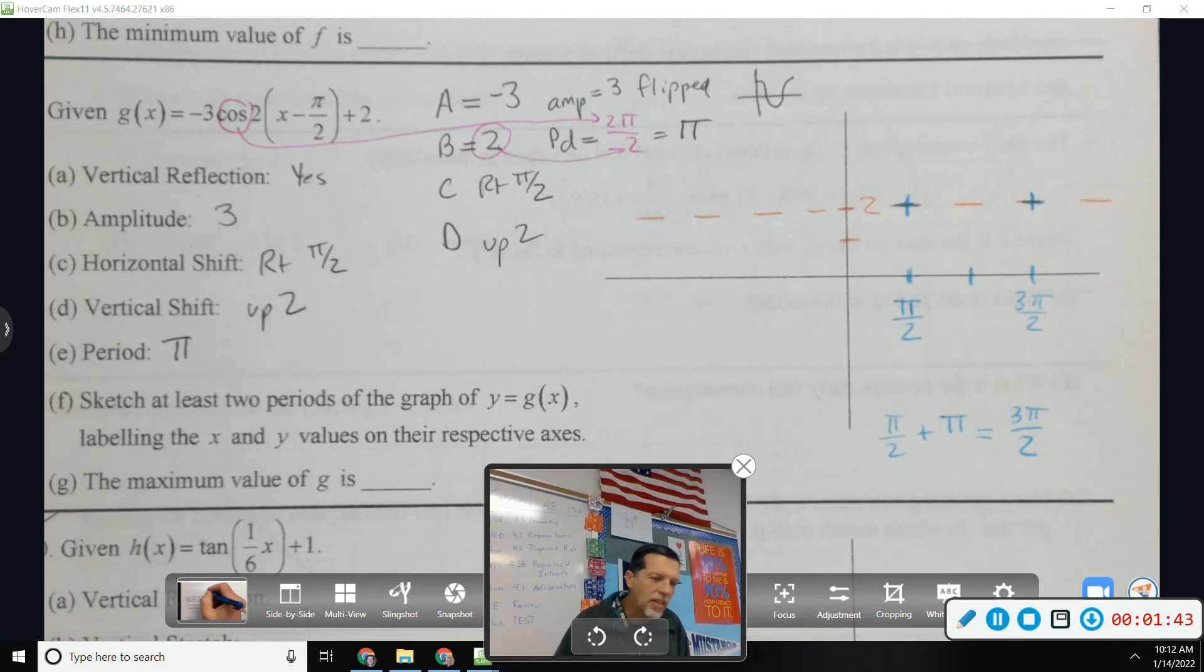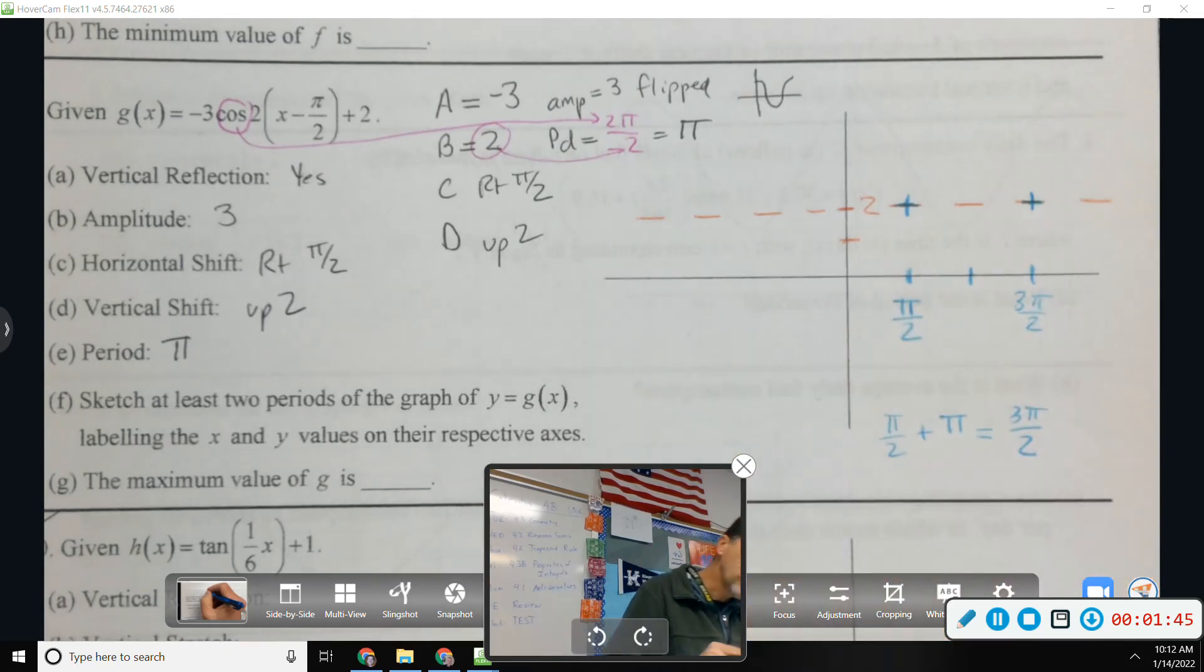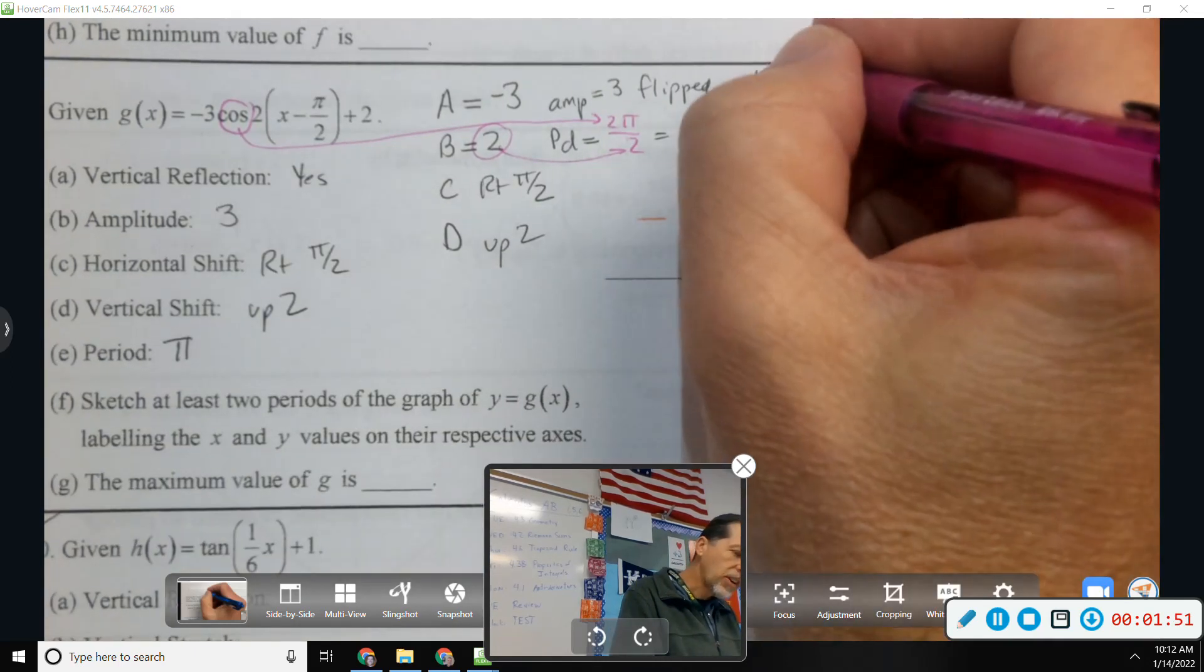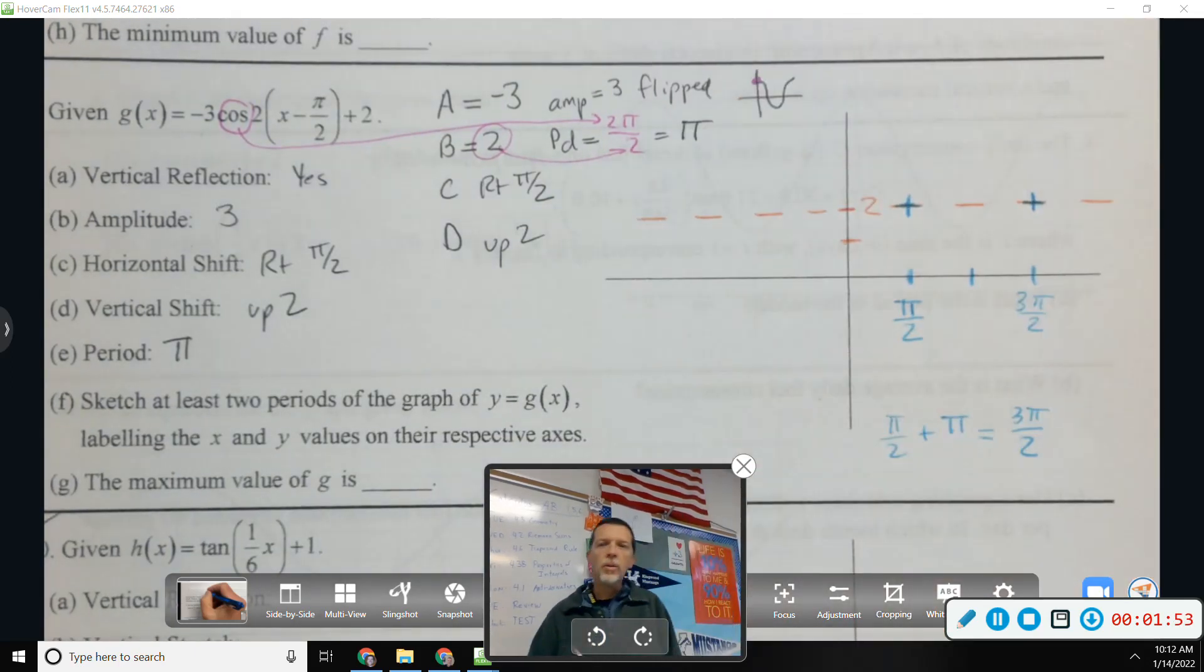Now I want to fit that in between pi over 2 and 3 pi over 2. All right. Normally, we start at a max for cosine. What are we going to be starting at here? Why are we starting at a min? Because it's flipped.